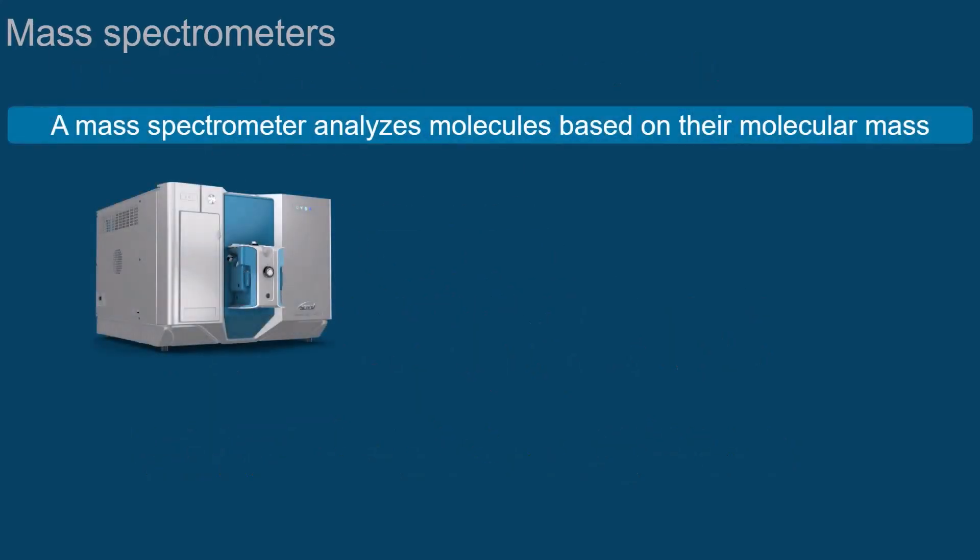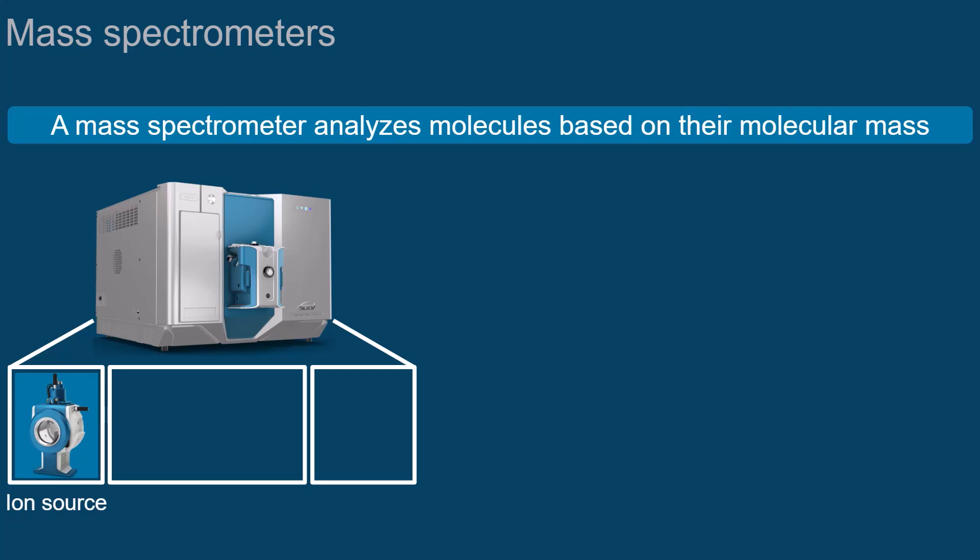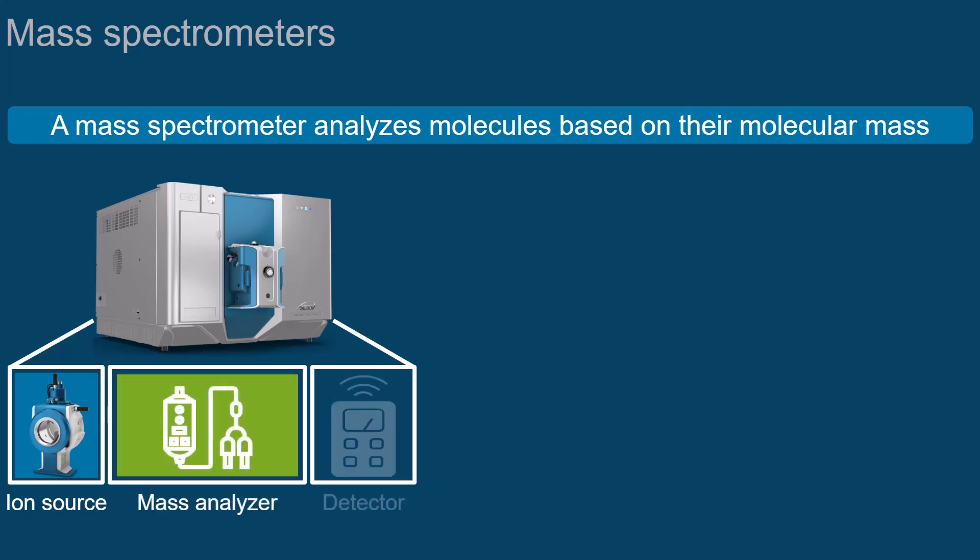A mass spectrometer is a machine that can analyze molecules based on their molecular mass. No matter what kind of mass spectrometer, it consists of three main components: the ion source, the mass analyzer, and the detector.